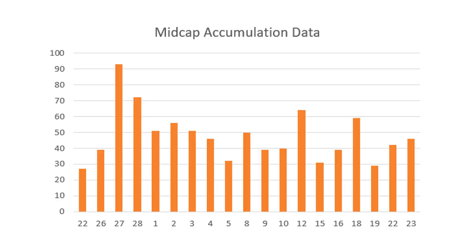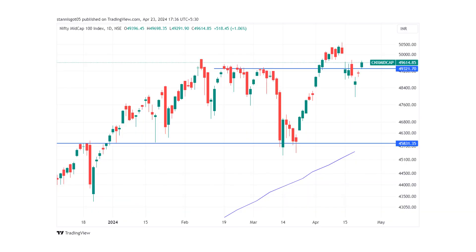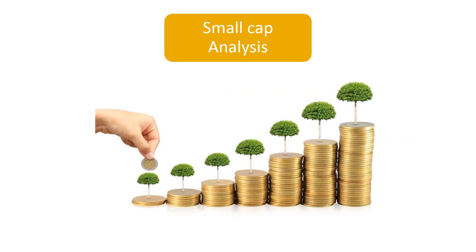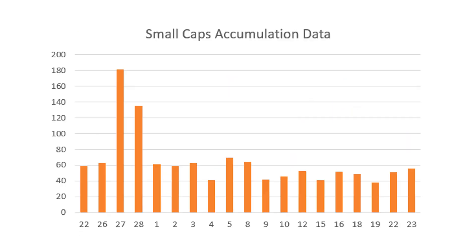Coming to the mid cap analysis — mid caps saw an increase in accumulation. Even in yesterday's session I mentioned that the increased mid cap accumulation should help them move higher. Today the accumulation is better than yesterday, and looking at the chart it has finally broken the resistance around 49,320. The only hurdle that remains is around the 50,000-plus mark, where it previously formed a top. If accumulation continues to be good, it should break that resistance too.